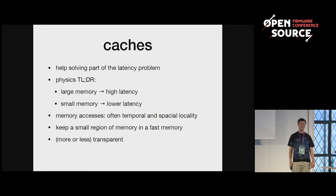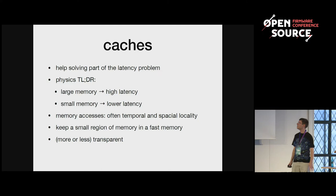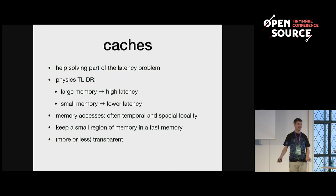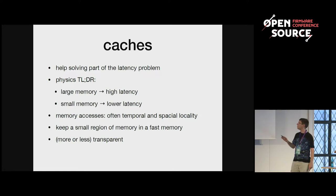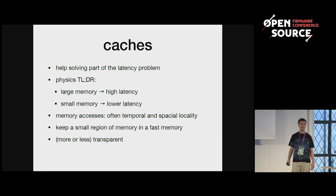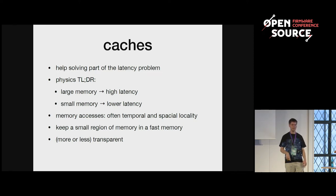The next element in the system are the caches. They help solve at least part of the latency problems, because if you have a larger memory the latency increases. All the lines in the memory get longer, and for high capacity you use DRAM, while for low capacity you can use the faster SRAM, which takes more space on the chip. You can implement memory with lower latency only if you use SRAM and keep the area small.